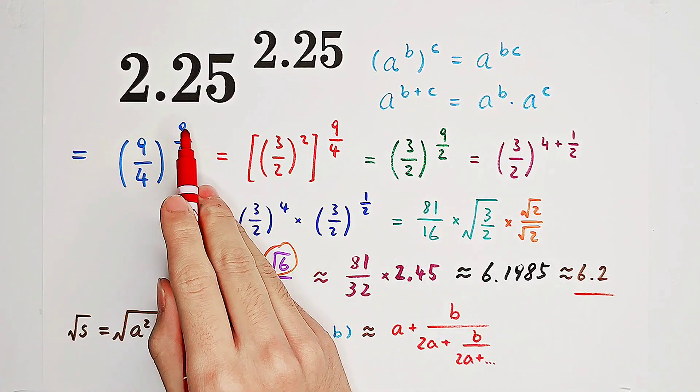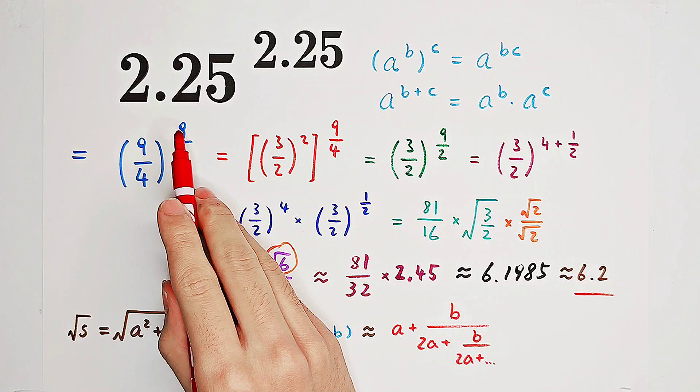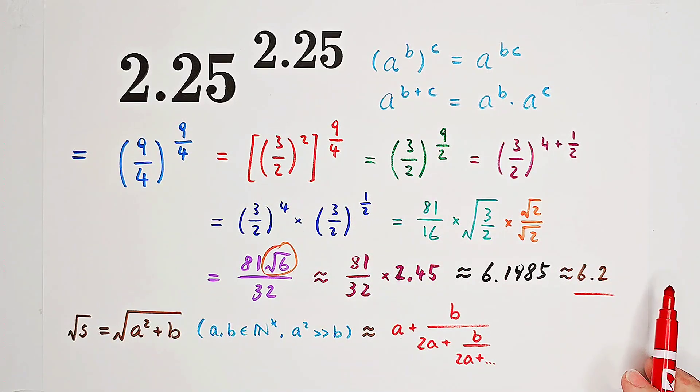Press 2.25 to the power of 2.25 on your calculator. And it's going to tell you that our approximation is very great.